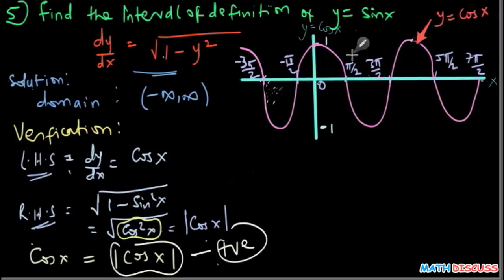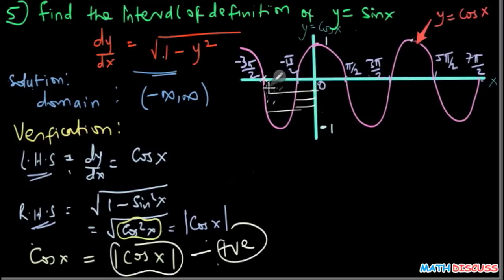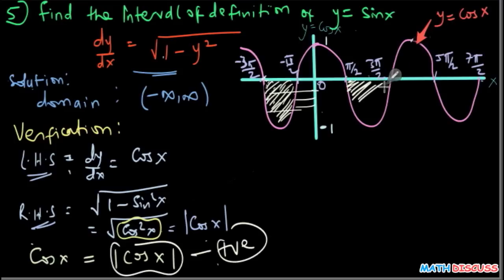Looking at the graph of y equals cosine x, cosine x is positive only in certain intervals. For values of x in the regions where cosine is negative, they correspond to negative values, so we do not include those intervals in the interval of definition. The regions where cosine x is positive are valid, while the regions where it is negative must be cut off.